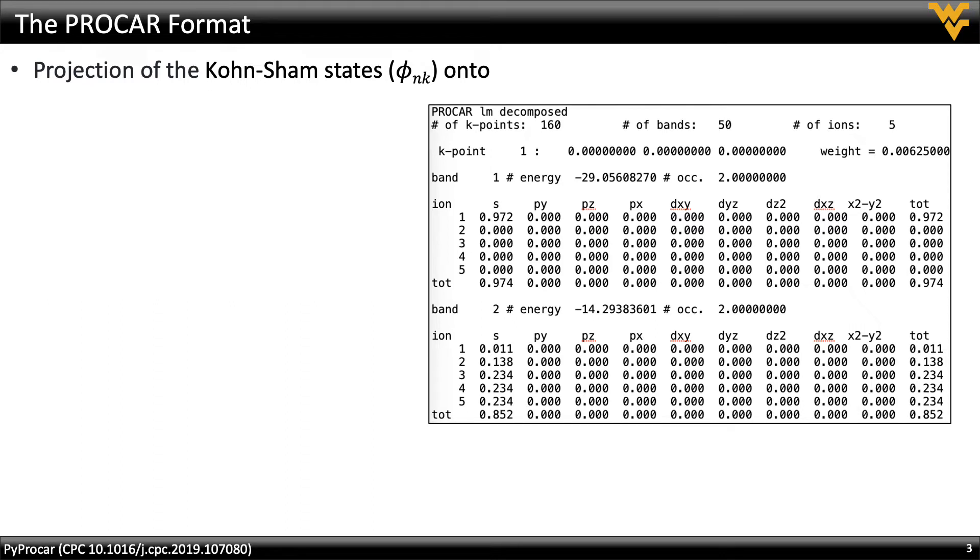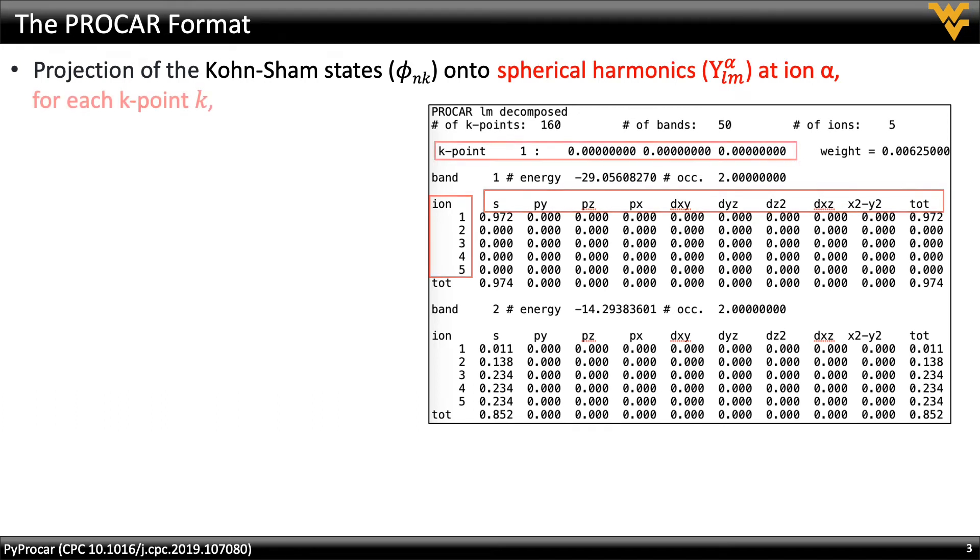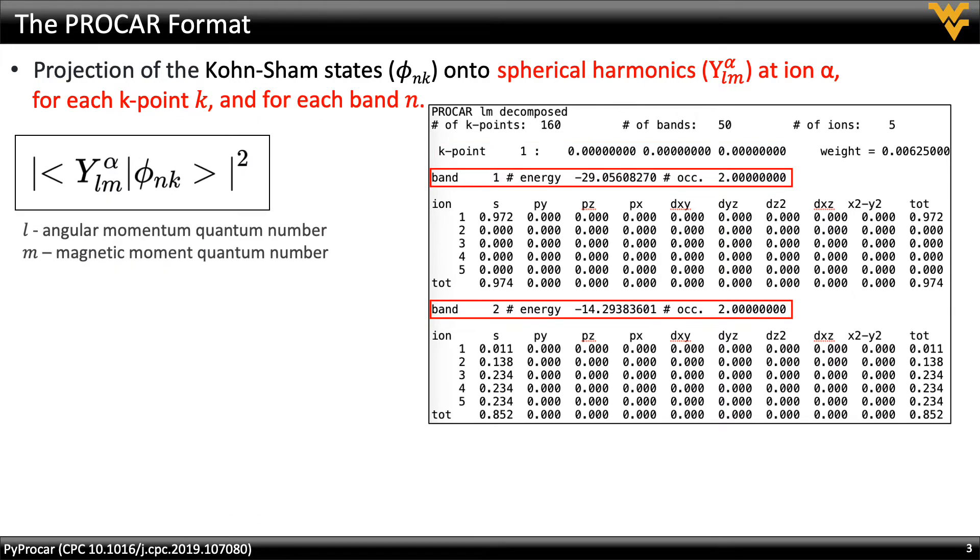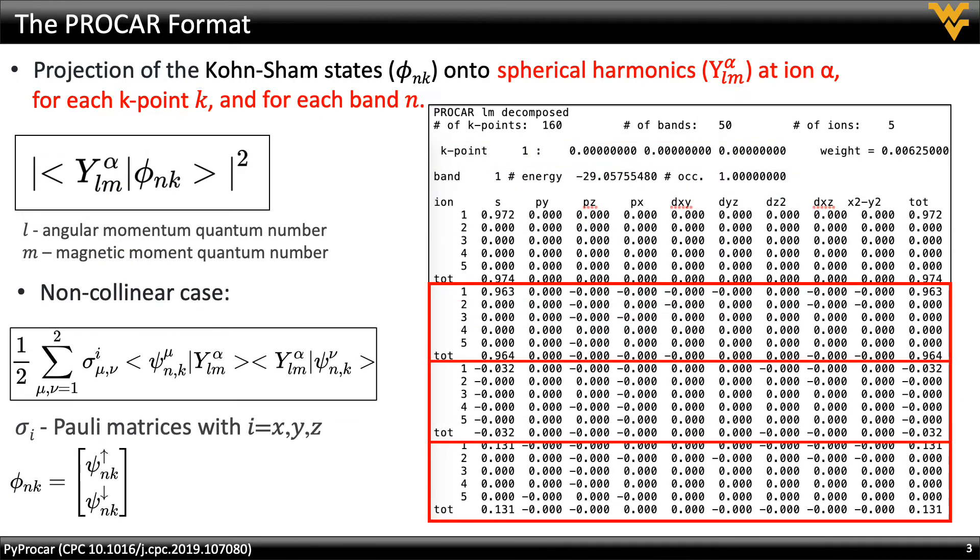PyProCar was initially based on the ProCar format as generated from the VASP DFT code. This represents the projection of Kohn-Sham wave functions onto spherical harmonics at each ion, each k-point, and each band. For spin non-collinear calculations, these projection blocks are repeated for each spin direction.